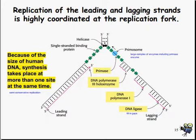Picking up where we left off last time, the replication of leading and lagging strands is a highly coordinated event that happens at the replication fork, processed forward by the DNA helicase. Because of the size of the human DNA, synthesis takes place at more than one site at a time, meaning the DNA is being synthesized and split apart and put back together in numerous places at once. You'll often see one piece of DNA with many different replication forks going on all at the same time.